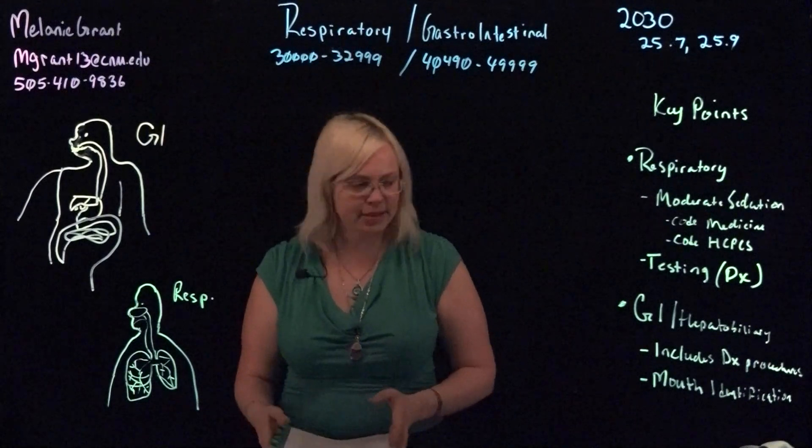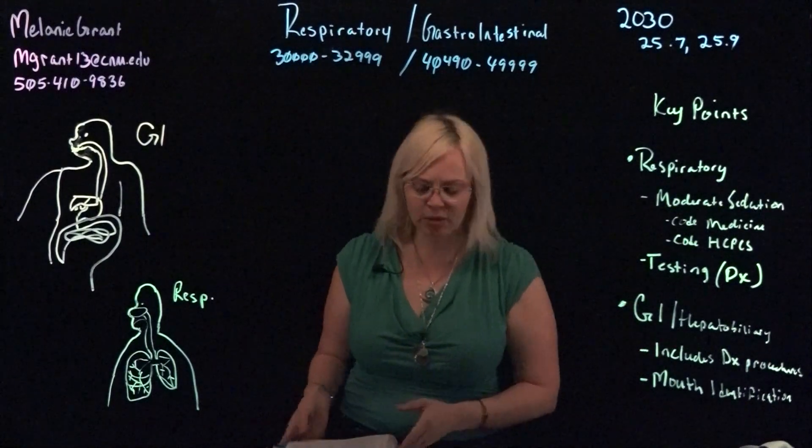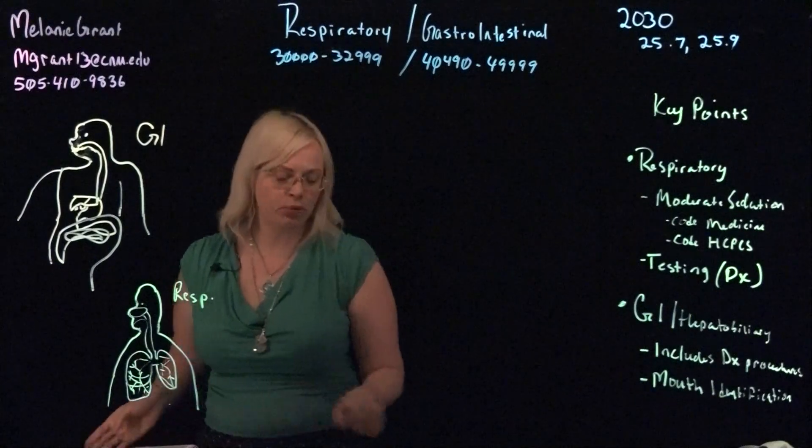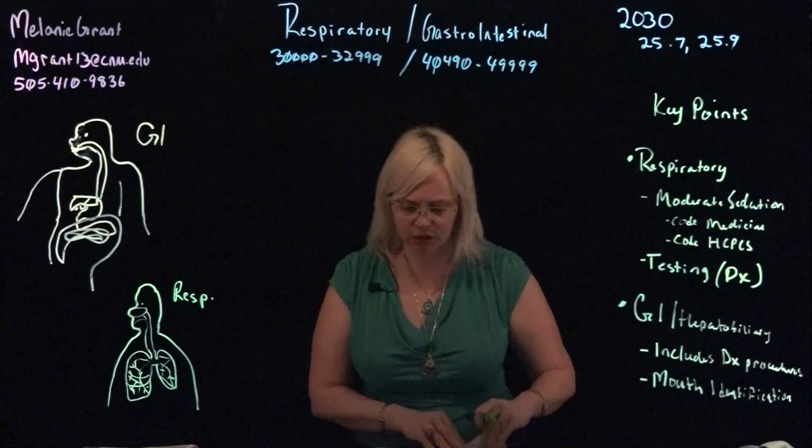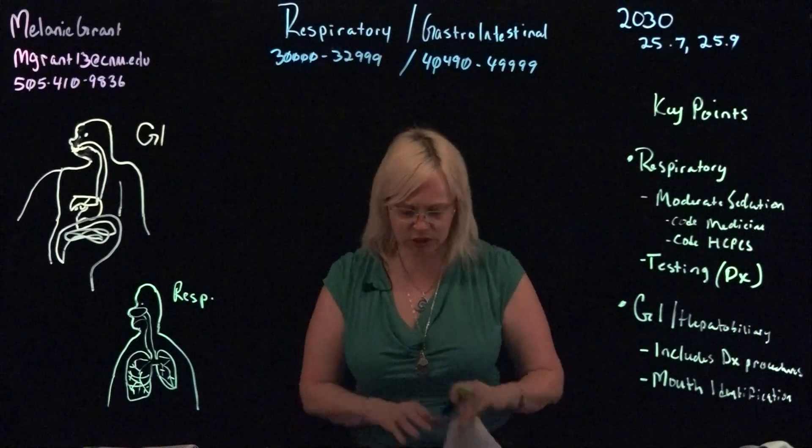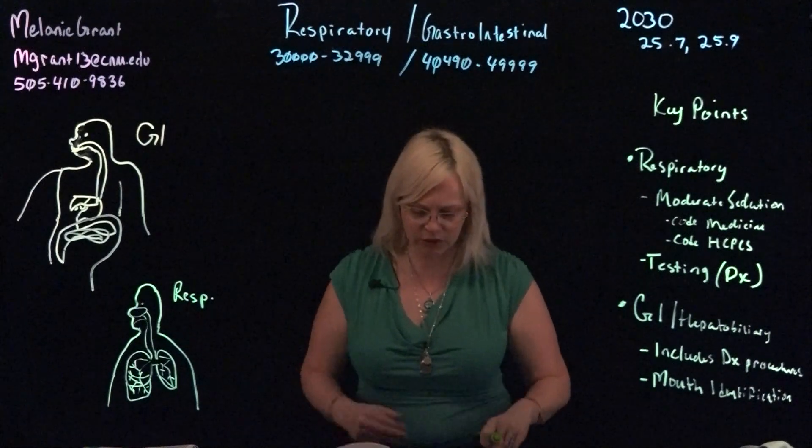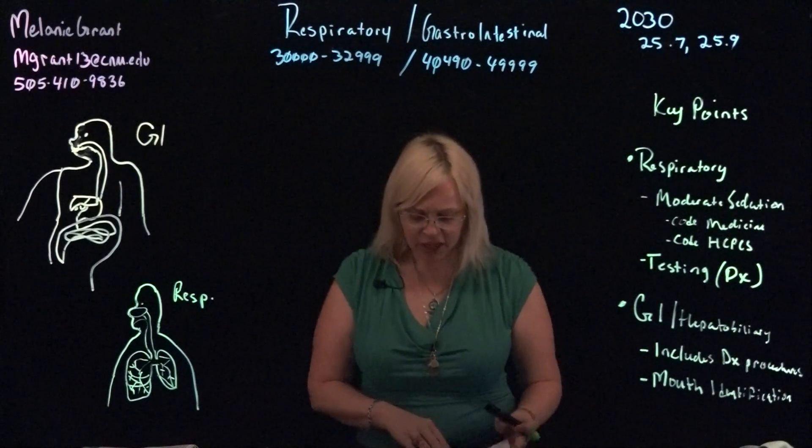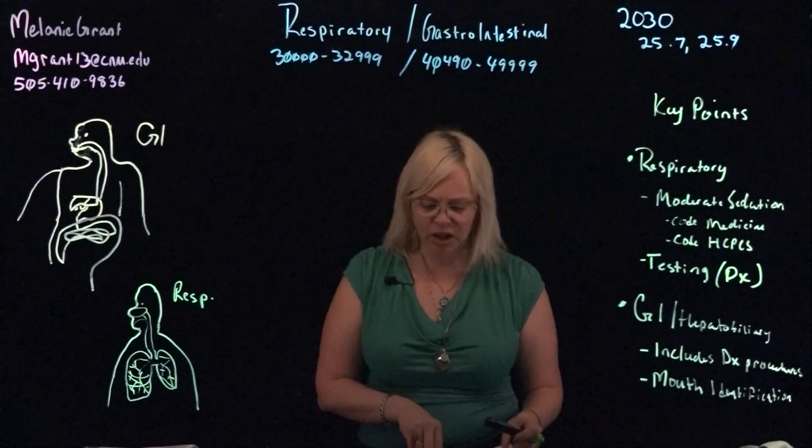Moving on to our GI system, we're going to look at the GI and hepatobiliary system and it's a brief overview from section 25.9. 25.9 starts on page in your textbook 759 and starts talking about endoscopic procedures.